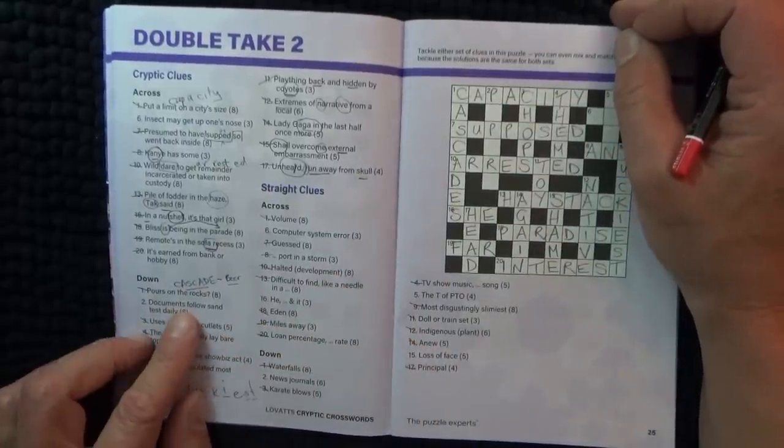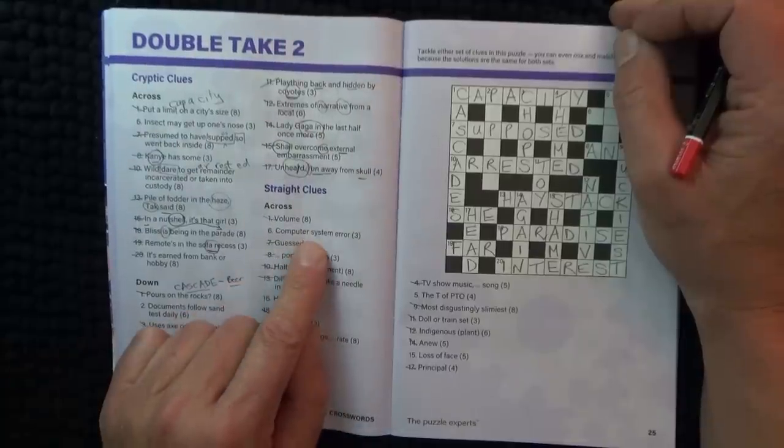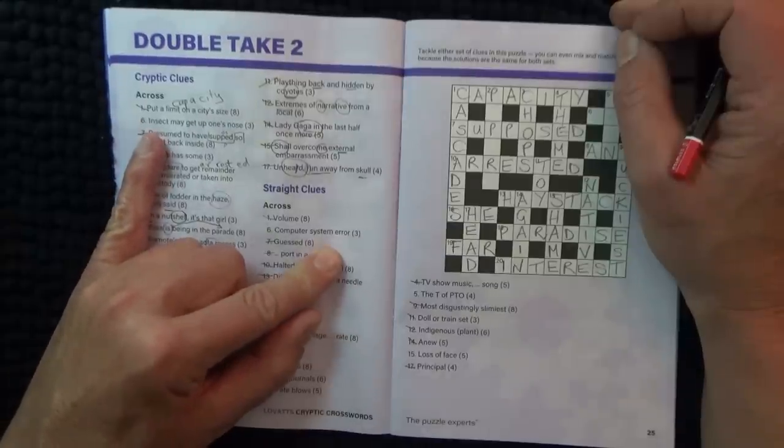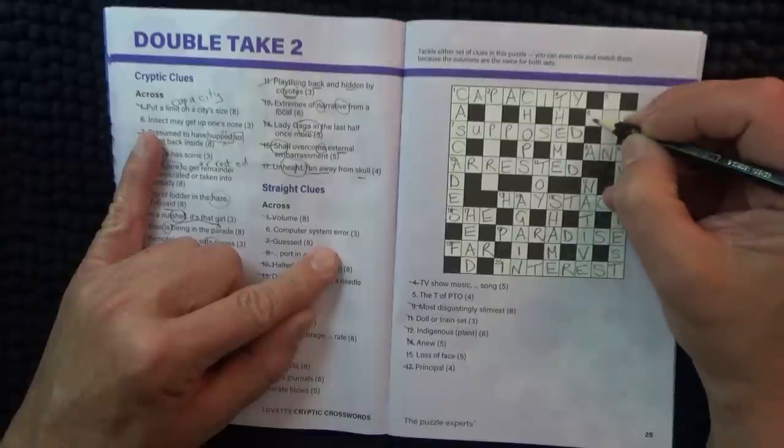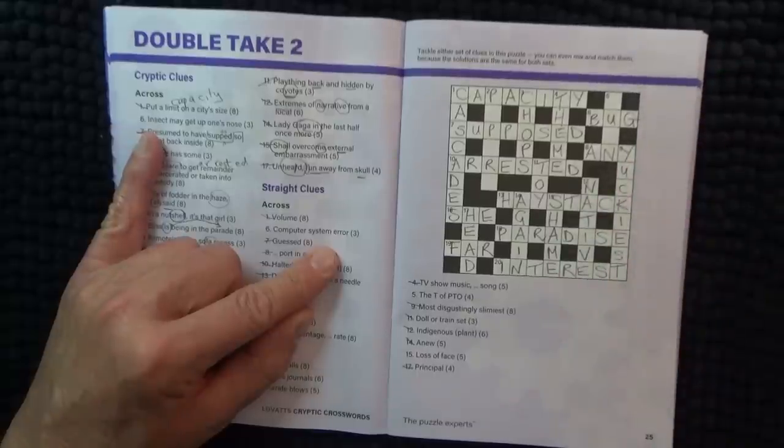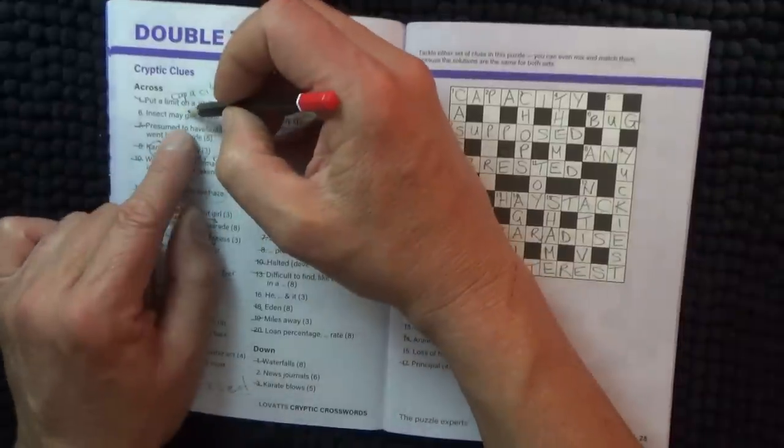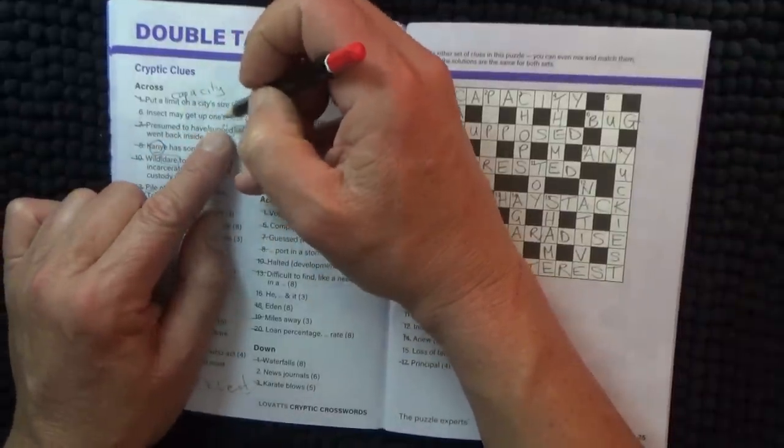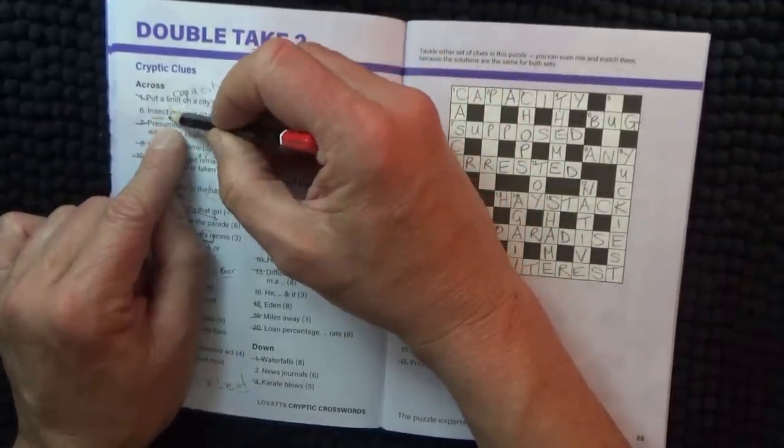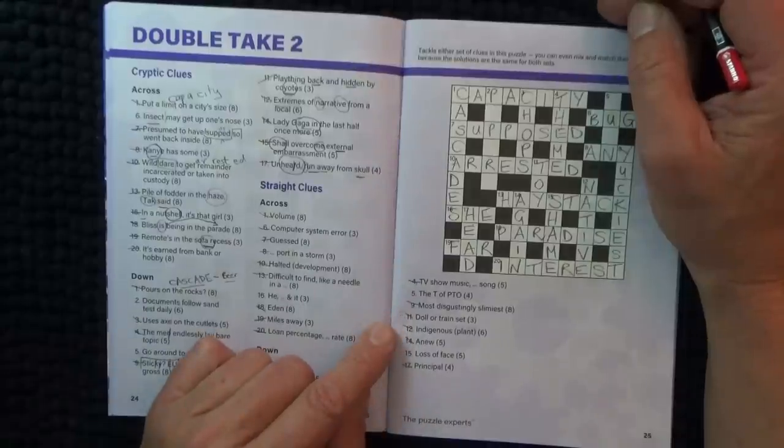Okay now, computer system error and an insect. Oh okay, yes, it's got to be bug. I think I'm going to get this out today. It's a bug, and then may get up one's nose, Mr. Bugs, I'm ready. And then an insect. And then the second half of the clue is may get up one's nose.